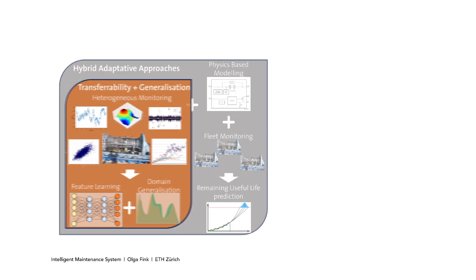In the second layer we combine AI algorithms with physics-based models, bringing the two together to benefit from the advantages of both while overcoming their individual limitations. This enables us to reduce the training data size, improve the generalization ability of the models, and provide better interpretability to decision makers.